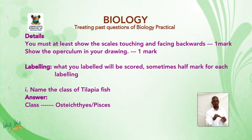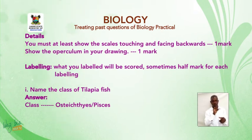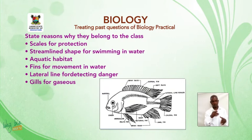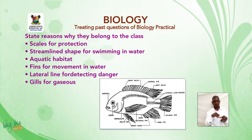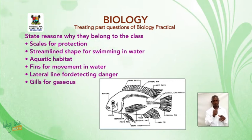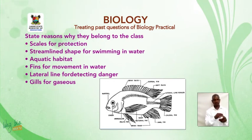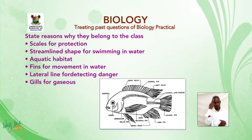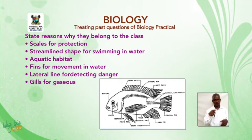Name the class of tilapia fish. Tilapia fish belongs to class Osteichthyes or Pisces. State the reasons why they belong to this class: they have scales for protection, streamlined body for swimming in water, they are aquatic organisms, they have fins for movement in water, lateral lines for detecting danger, and gills for gaseous exchange.